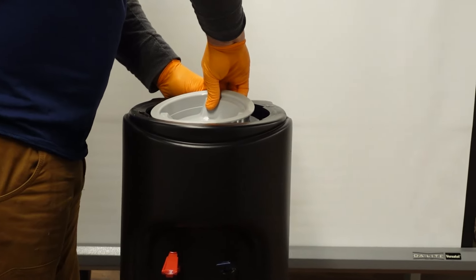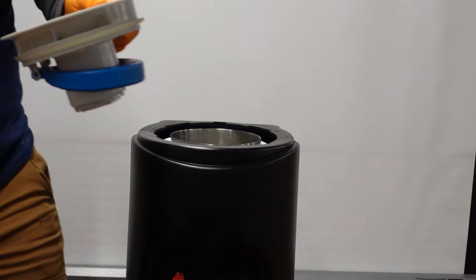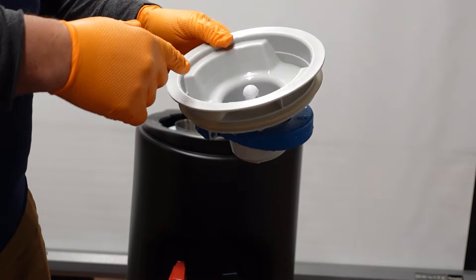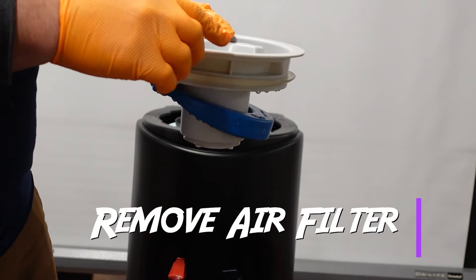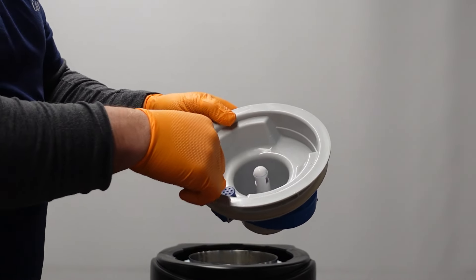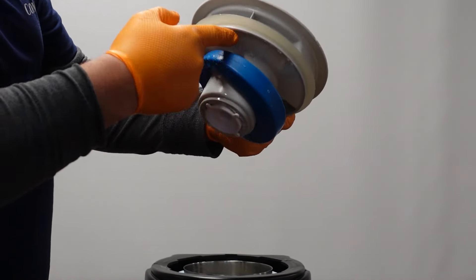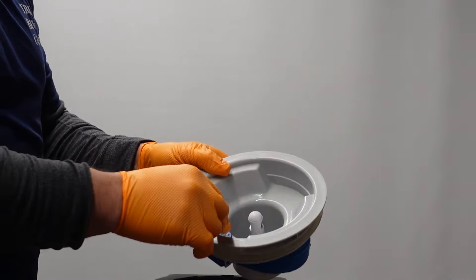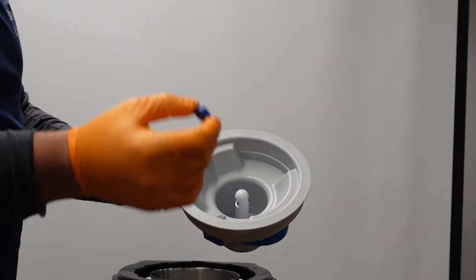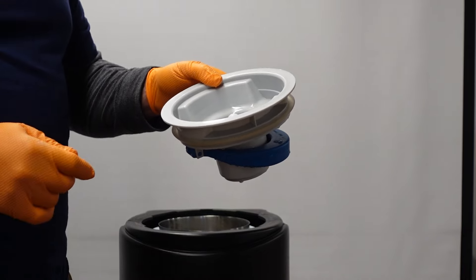As you can see here, there's some dust that has accumulated in the safeguard. The air filter on this dispenser is located on the safeguard on the top. Sometimes it's located on the bottom ring, but on this model the air filter is located on the top.